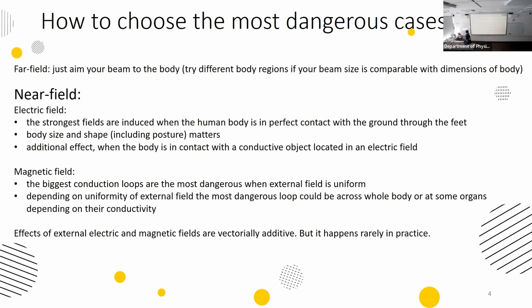The worst case for electric fields is when a human is in contact with a grounded object. It's the easiest way — where both your body and your device are grounded. The body size — whether it is a child, adult, or specific weight — and the posture of the human, whether sitting on the floor or standing upright, also matter for electric fields, depending on the distribution of the electric field. There is an additional effect when a human touches a conducting object that is not grounded but is located in an electric field.